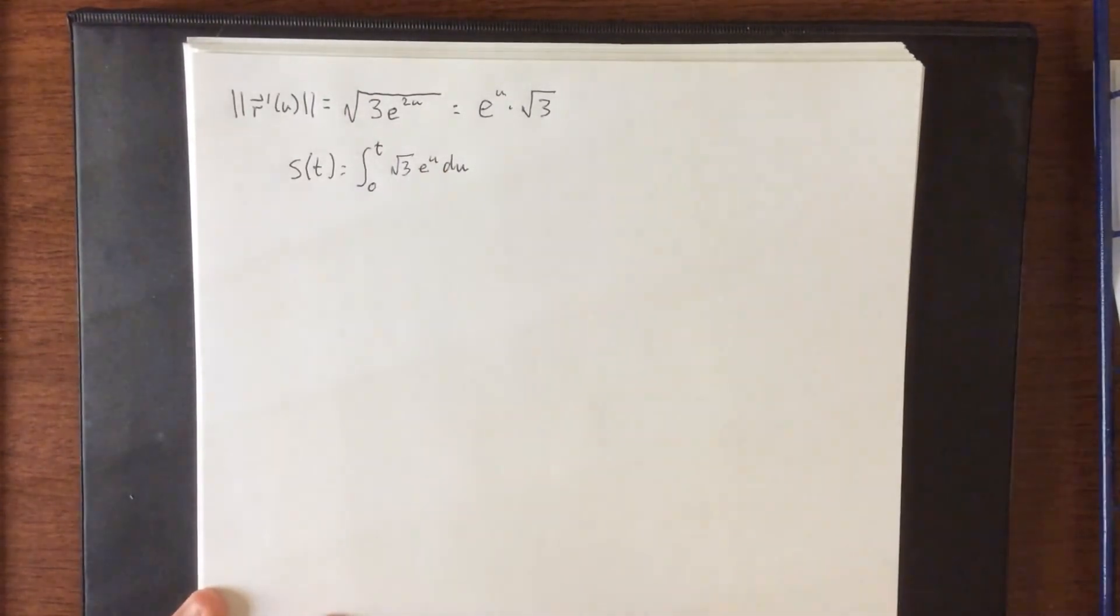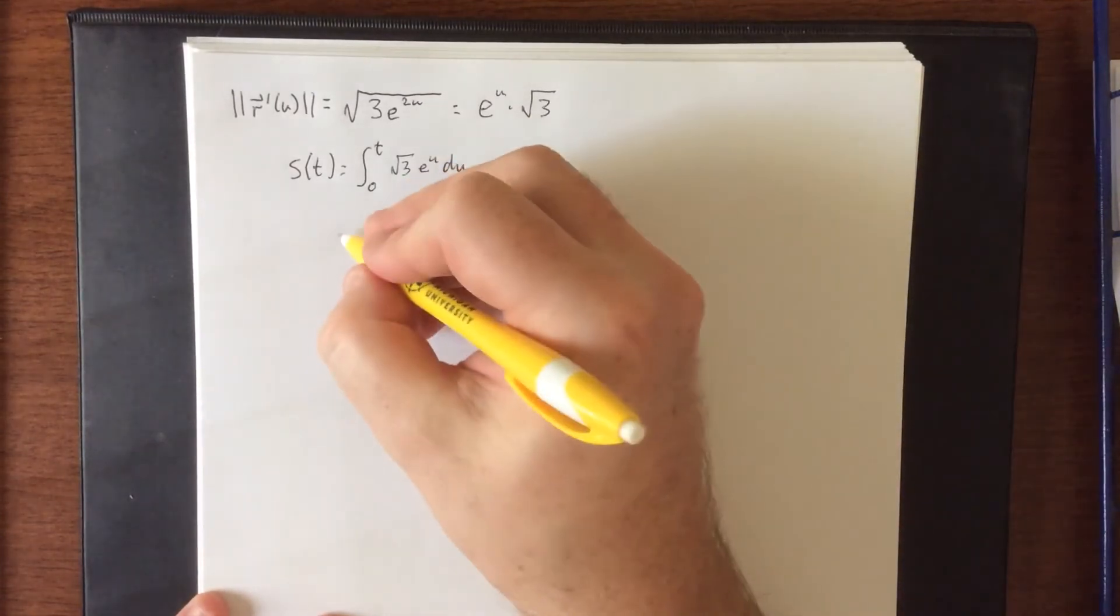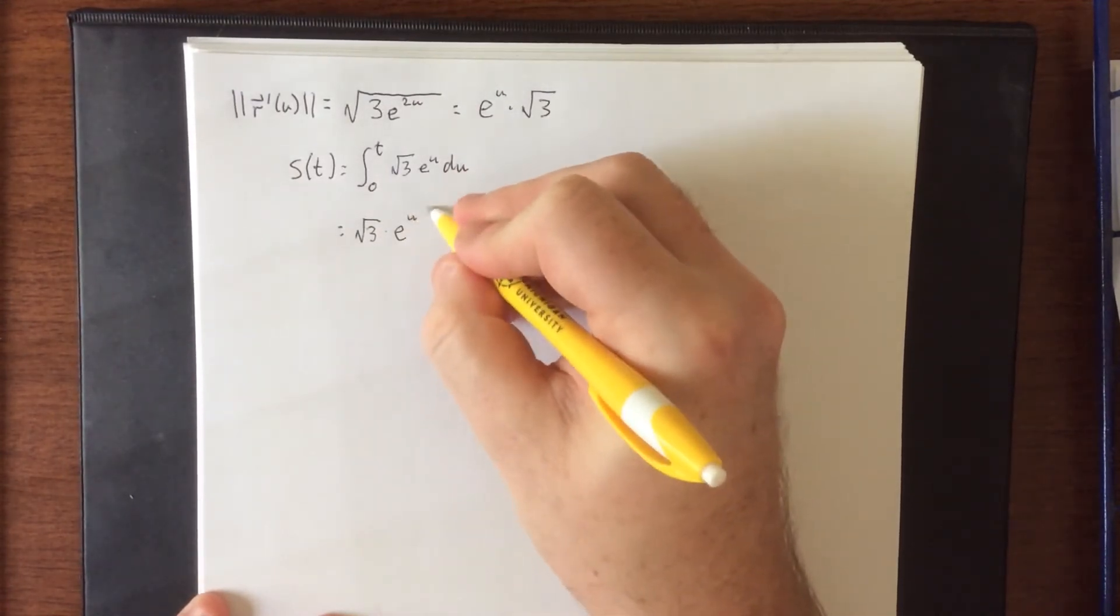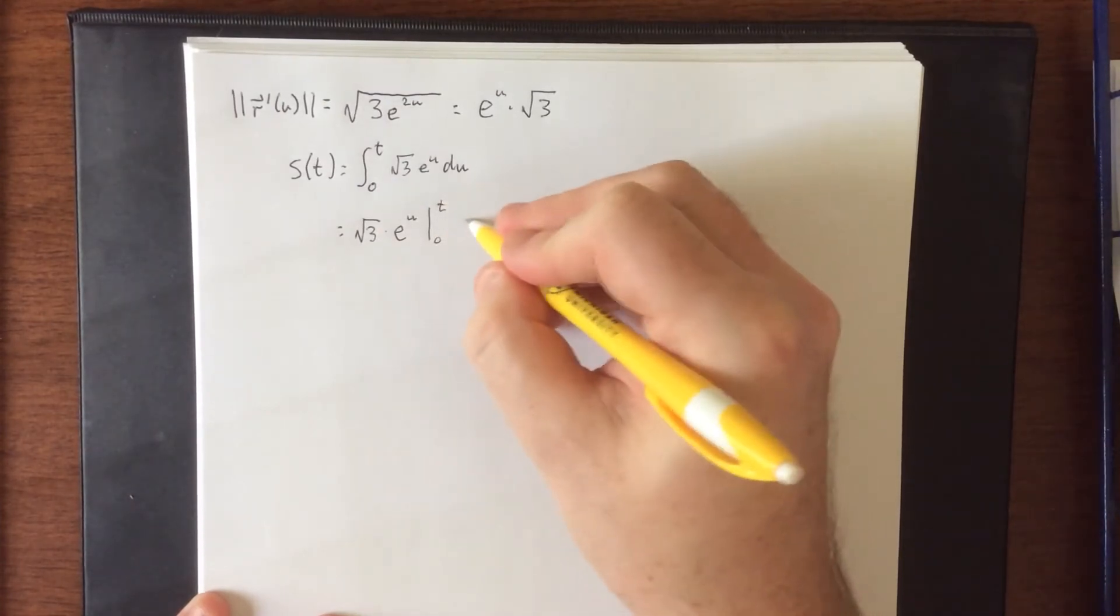What we're going to do is actually perform this integral, and then plug in t. Then once we have that, we're going to try solving for t. So root three, that is a constant multiple, so we ignore it. Integral of e to the u is simply e to the u. This will be going from zero to t.